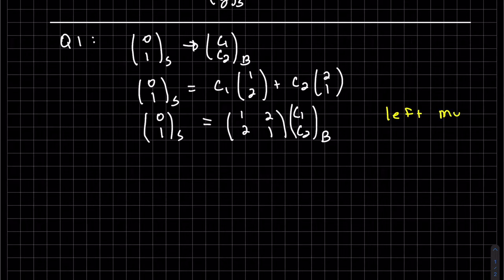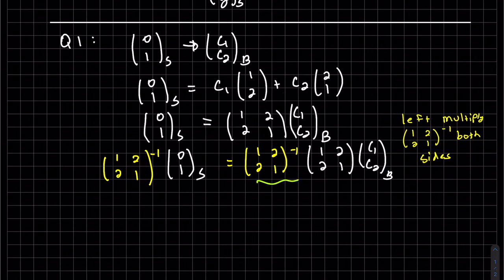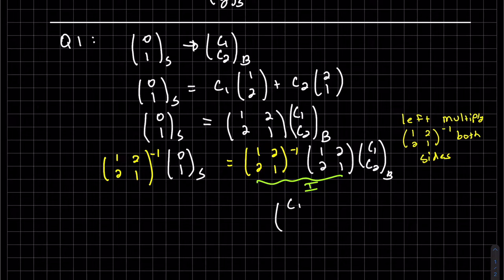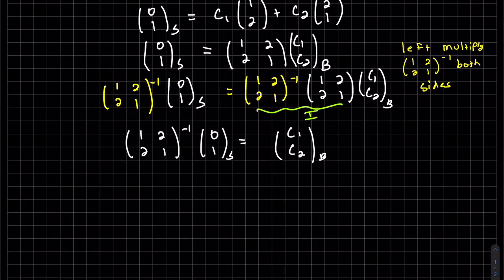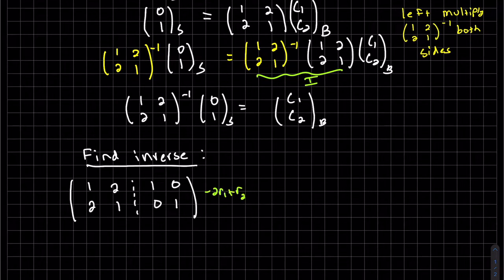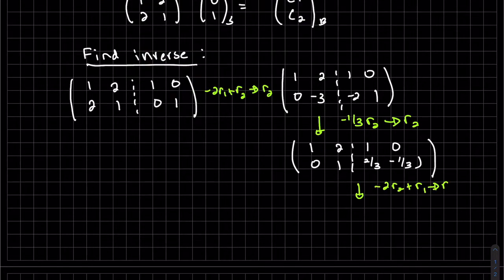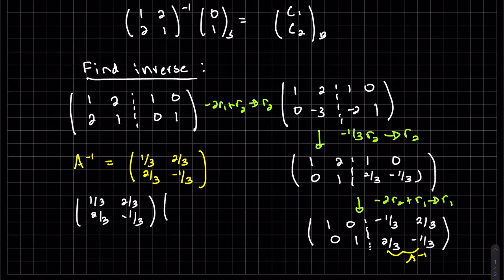We're going to left multiply by both sides of the inverse. This becomes I, and then I times that. We have isolated this. So let's find the inverse.